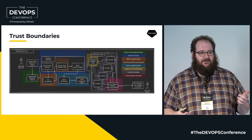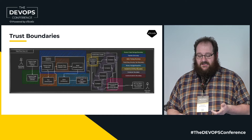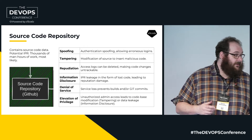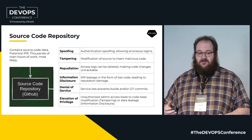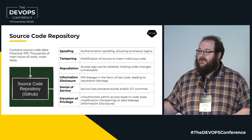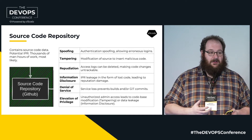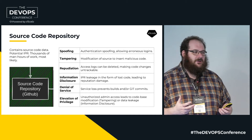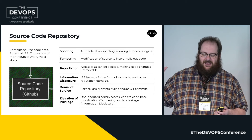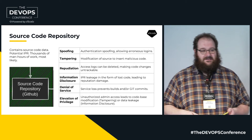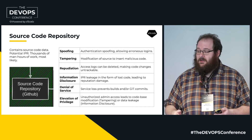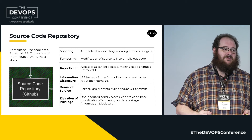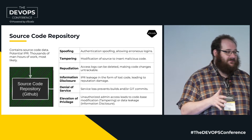I now have a minute and 40 left, so I'm going to do some of the STRIDE analysis on these trust boundaries. Source code repository: this is where your code's stored. Spoofing might be spoofing the entire system and having people push code there. Tampering might be someone altering your code, adding repositories or dependencies that you don't want there. Repudiation always comes down to logging properly — if you log properly, repudiation is not a problem. Information disclosure is the loss of IPR, so your code gets stolen. Denial of service means you can't reach the service and no work happens. Elevation of privilege is someone logging in that you don't want to.